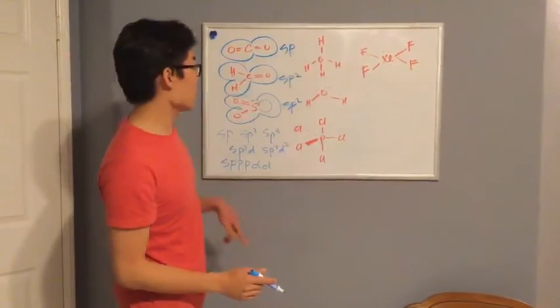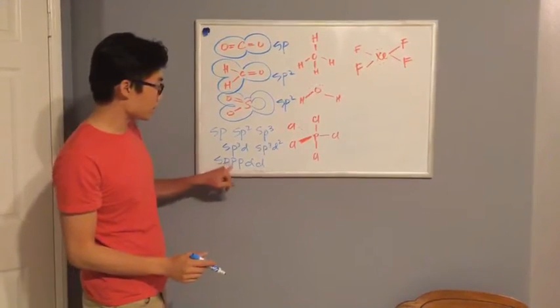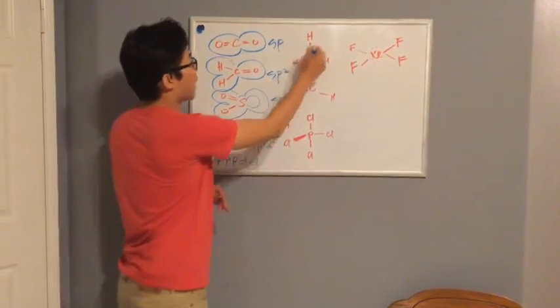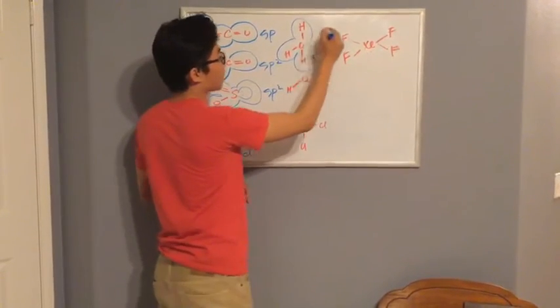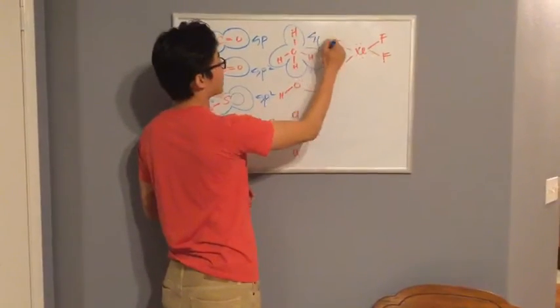Over here, we have a tetrahedral. Again, we want to count s, p, p, p, d, d. S, first p, second p, third p. Hybridization, sp3.